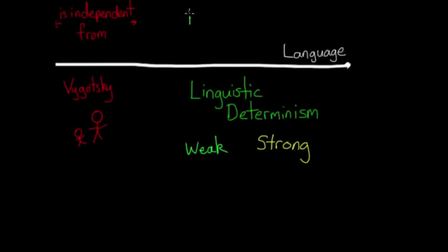So weak linguistic determinism says that language influences thought. It makes it easier or more common for us to think in certain ways depending on how our language is structured. So for example, I'm going to read you a sentence. And I want you to draw it out, or at least vividly imagine it. The girl pushes the boy.